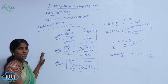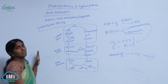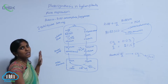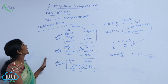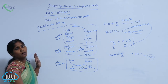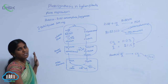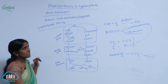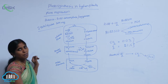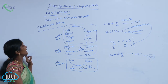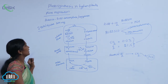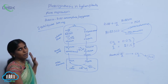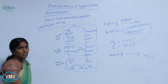Photorespiration is the coordinated work of three organelles: chloroplasts, peroxisomes, and mitochondria. The first stable compound formed in this process is glycolate, which consists of two carbon molecules. Hence, this cycle is called the C2 cycle and also the glycolate pathway.